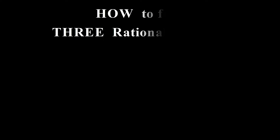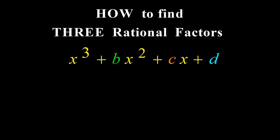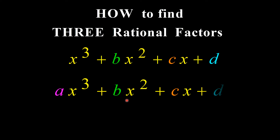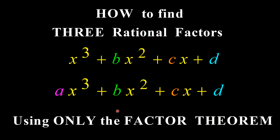In this video I'm going to show how to find three rational factors of cubics. First the basic form x cubed plus bx squared plus cx plus d with a leading coefficient of 1, and then the general form ax cubed plus bx squared plus cx plus d where the leading coefficient is not necessarily 1. Here I'm only going to make use of the factor theorem.